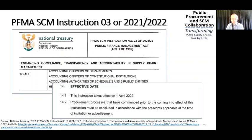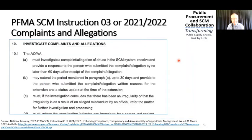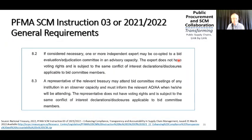Just on section 8.2 — during the consultation, we highlighted that this particular rule cannot be used for certain types of procurement. When you do competitive dialogue, independent juries are best practice. You do not use your internal staff for that. The other example, also permitted in terms of the South African national standard, are design contests — they use independent juries who make the final decision.